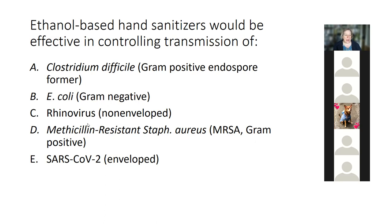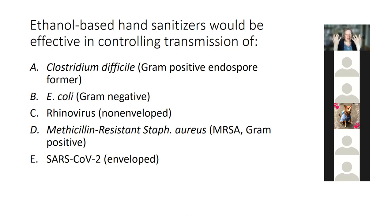MRSA and rhinovirus tied for third. Staphylococcus aureus will be fairly effectively controlled by ethanol hand sanitizers, but it's a skin bacterium and more resistant to drying than E. coli — it's adapted to the dry desert of your skin. E. coli likes the lush rainforest of your large intestine. When you drop a rainforest inhabitant into the dry desert, they don't last long.